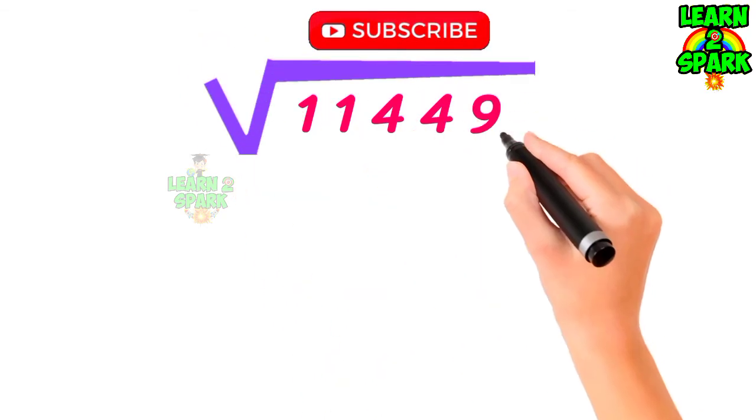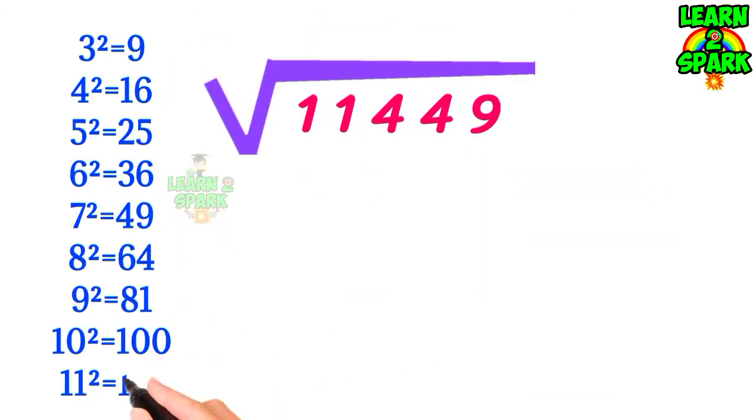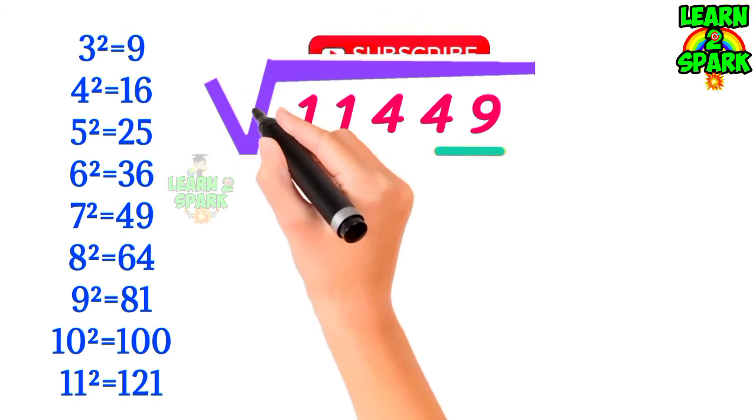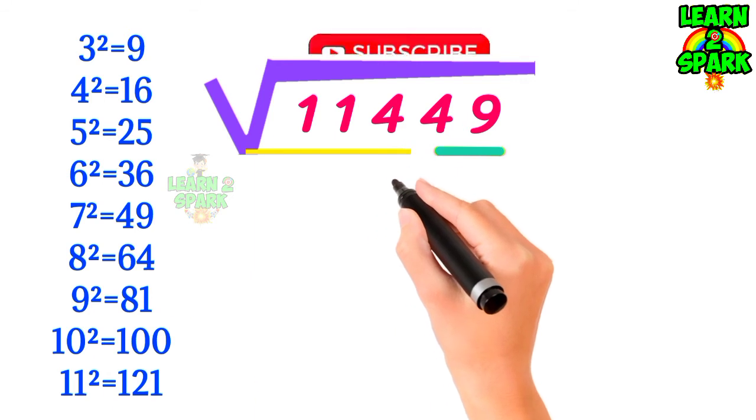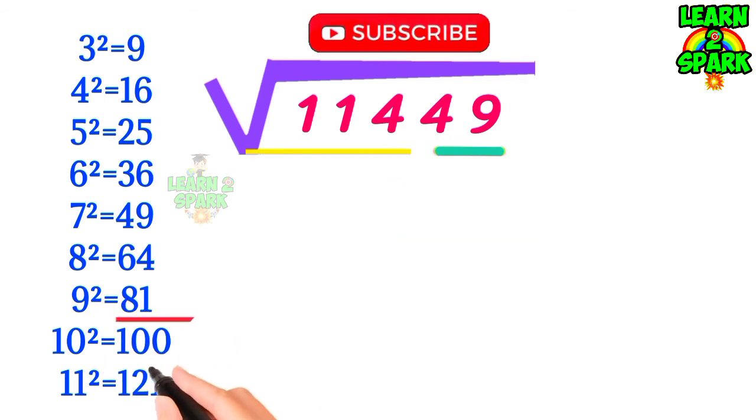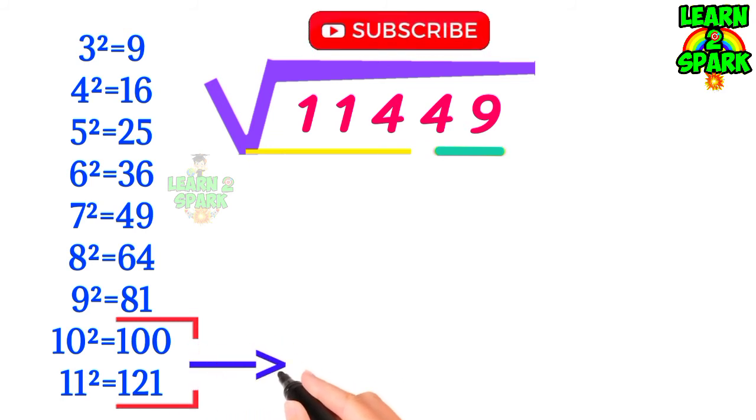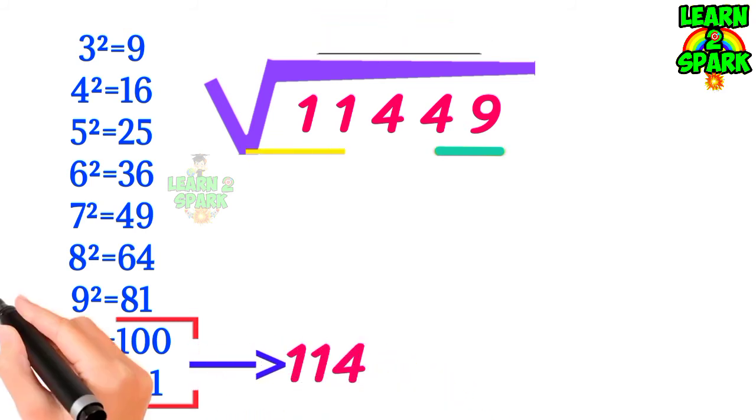See how simple it is. Now let's do one more sum to clear our concepts using a 5 digit number. Initial processes are same. Group it into 2, last 2 digits in one group and remaining in another group.